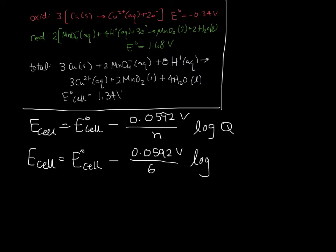For Q, we can look back to this equation to find out what we need to put in the numerator and the denominator. From the right-hand side, from the products, we have Cu²⁺, and that has a coefficient of 3. From the reactants, we have MnO₄⁻, and that has a coefficient of 2. And then we have H⁺, which has a coefficient of 8.